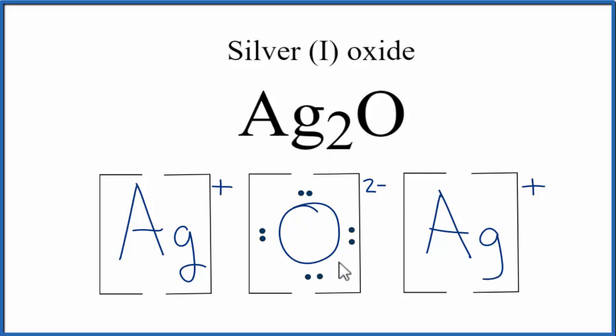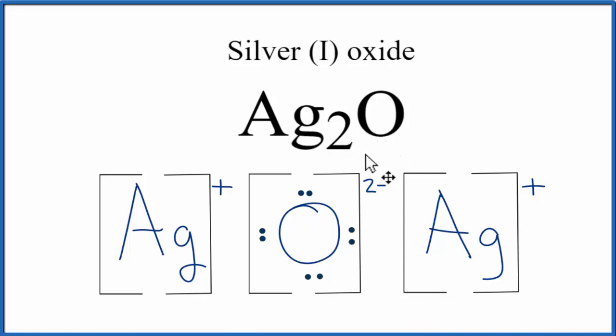This is useful because it shows us how the electrons were transferred to form the ionic bond. This is Dr. B with the Lewis structure for Ag2O, and thanks for watching.